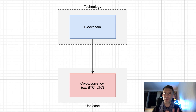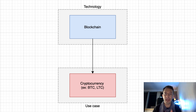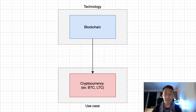A lot of people confuse cryptocurrencies with blockchain, but they are two different concepts. Blockchain is a technology. Cryptocurrencies like Bitcoin or Litecoin are digital currencies. These digital currencies make use of blockchain technology, but the use case of blockchain is not limited to cryptocurrencies — it can also be used to build advanced financial applications, games, etc.